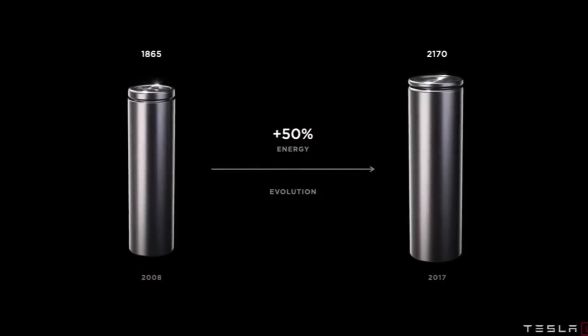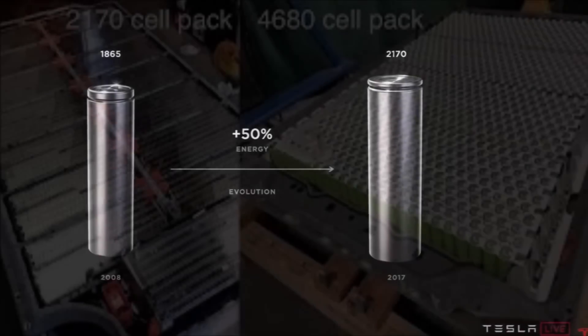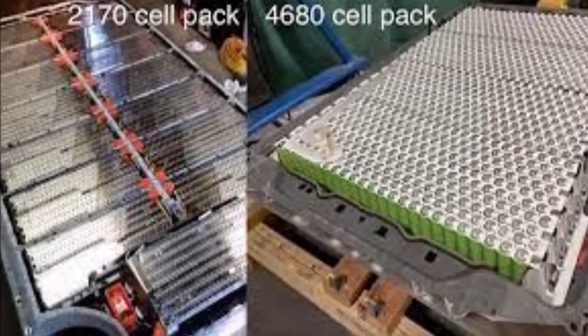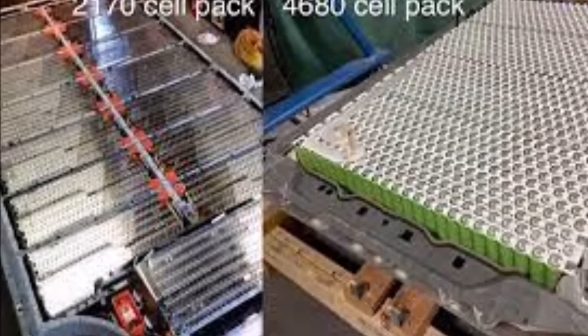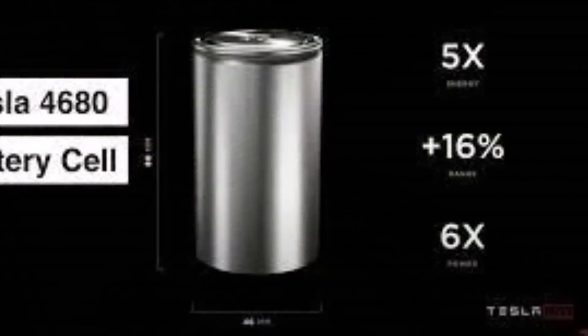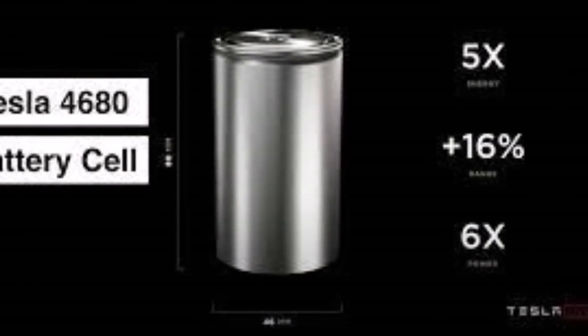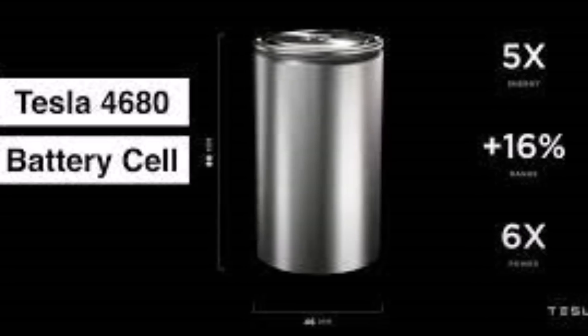Sadly, Tesla's publicly disclosed target for the 4680 cell production ramp appears to have been made on Elon time, which a lot of people now question. When Elon says something will be ready next year, that could mean next year, could be in a few years.